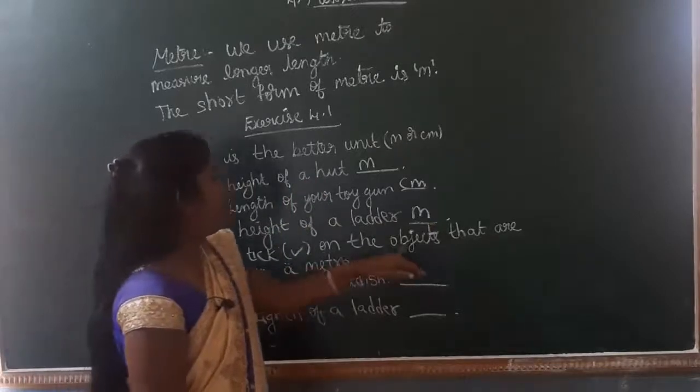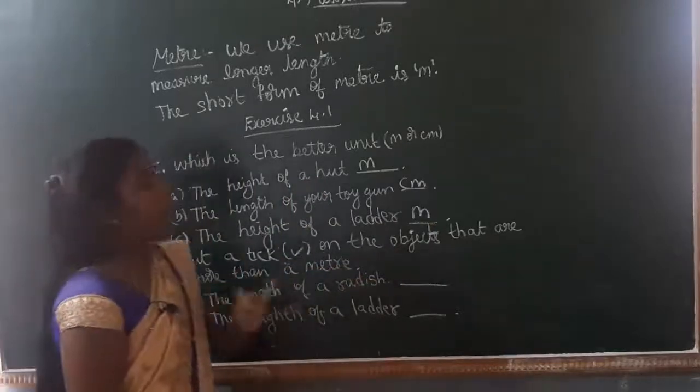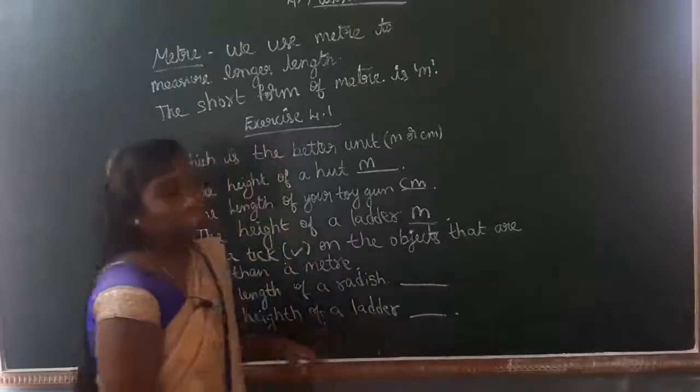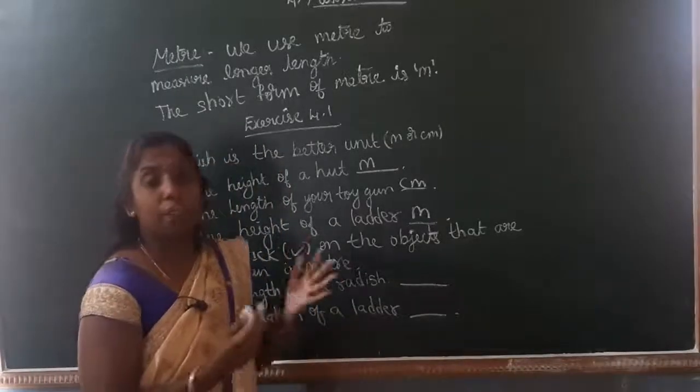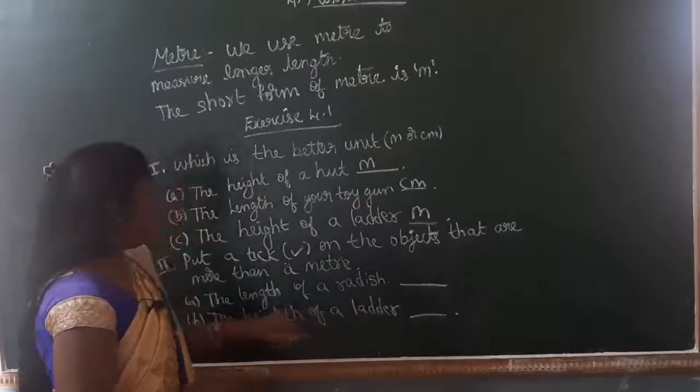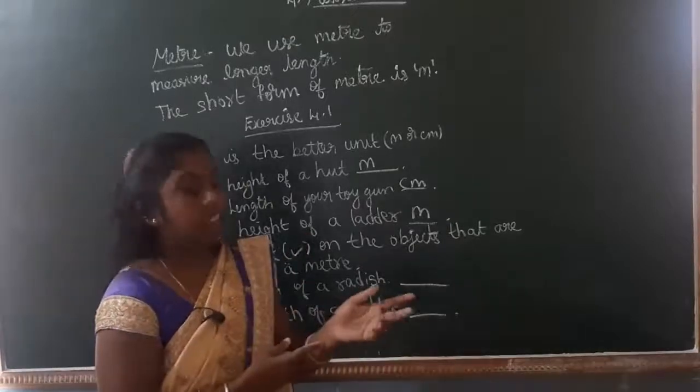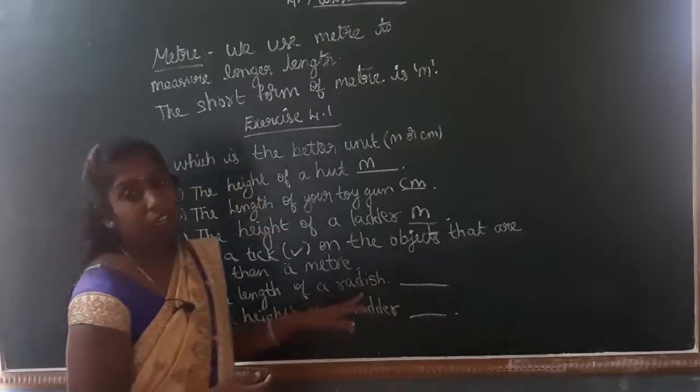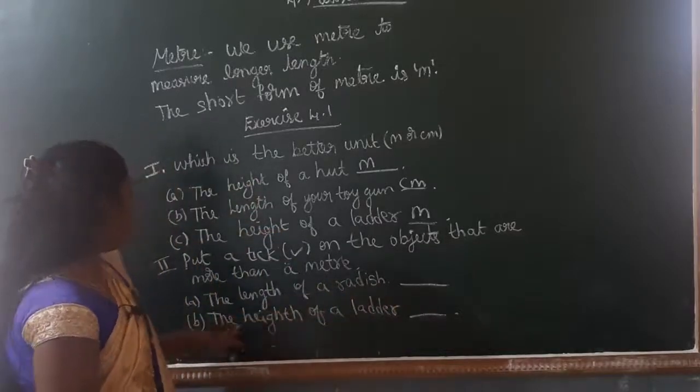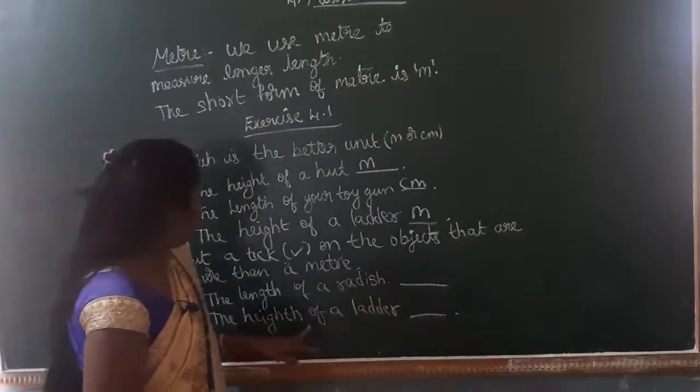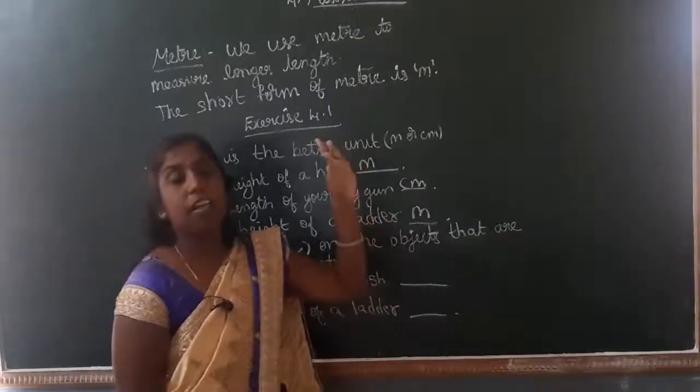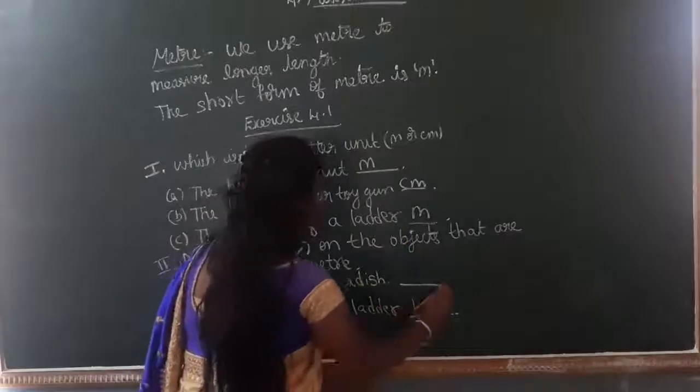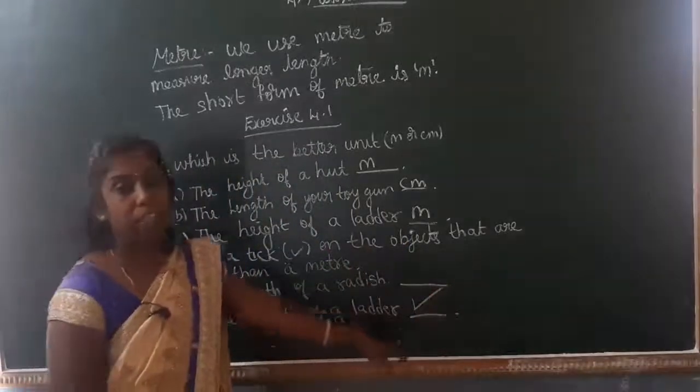Next, put a tick on the objects that are more than a meter. So here we have to tick. It is more than meter means we have to tick. The length of a radish, radish is small. So we are not using, that is not one meter also. So we are not using meter. The height of the ladder, ladder is more than a meter. So we use meter. So put tick.